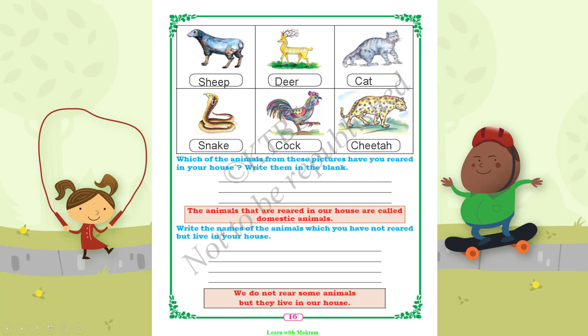Now write the names of animals which you have not reared but which live in your house. There are certain animals we do not rear but they still live with us - for example, cockroach, mosquito, lizard, and housefly. We do not raise these animals, but they live in our house.